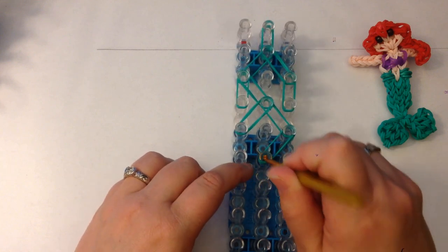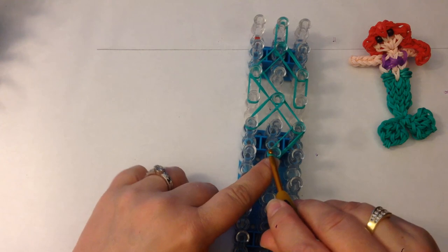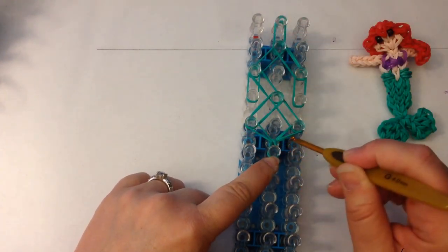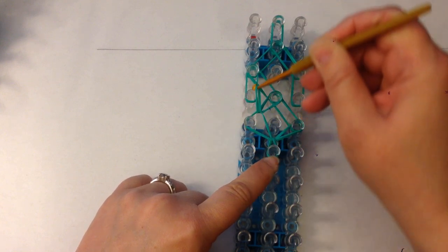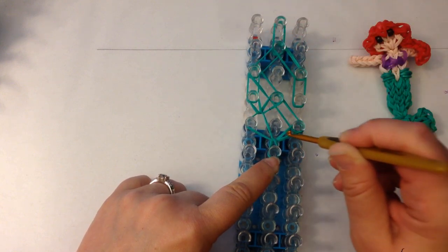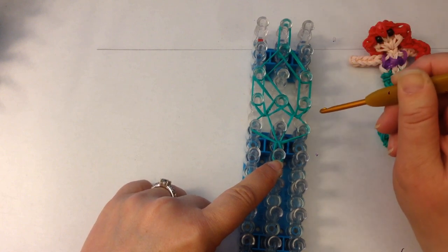We're going to dig down past the end cap and grab those two bottom bands. They are going to be loomed across here to the side. This one is then loomed up to here, and this one is loomed to here.